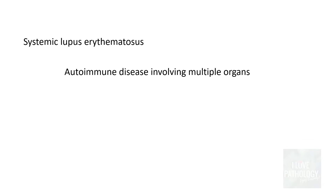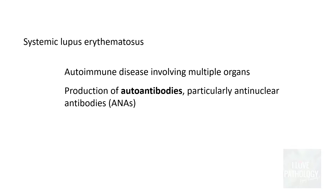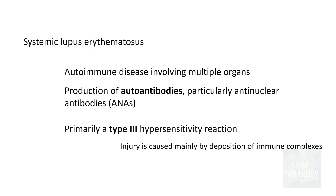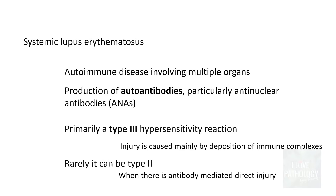What is systemic lupus erythematosus? This is an autoimmune disease involving multiple organs where there is production of autoantibodies, particularly anti-nuclear antibodies. It is primarily a type 3 hypersensitivity reaction, meaning injury is caused mainly by deposition of immune complexes. It can also be a type 2 hypersensitivity reaction with antibody-mediated direct injury, but SLE is predominantly a type 3 hypersensitivity reaction.